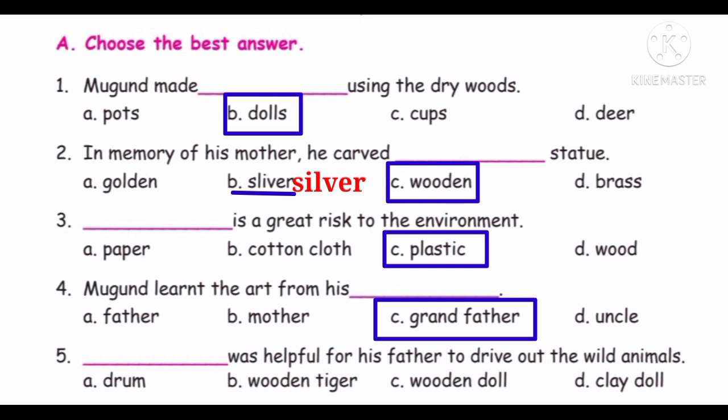Fifth question: Dash was helpful for his father to drive out the wild animals. Options: Drum, Wooden tiger, Wooden doll, Clay doll. Muhun made wooden tigers and wooden dolls, but what he made specially to drive away wild animals for his father was a drum. So the answer is drum. Drum was helpful for his father to drive out the wild animals.